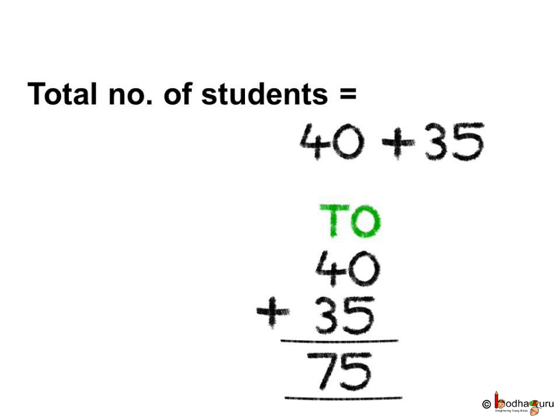Let us add: 40 plus 35 is equal to? Starting with the ones, 0 plus 5 is 5. Coming to the tens position, 4 plus 3 is 7. Thus, there are a total of 75 students in the class.